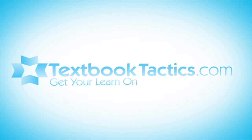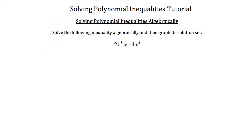This is the solving polynomial inequalities tutorial. The first method I'd like to discuss is the algebraic method. We'll solve the following inequality algebraically and then graph its solution set. We've got 2x cubed is greater than negative 4x squared.